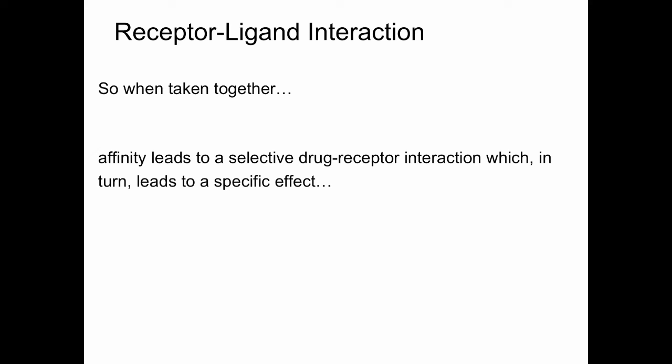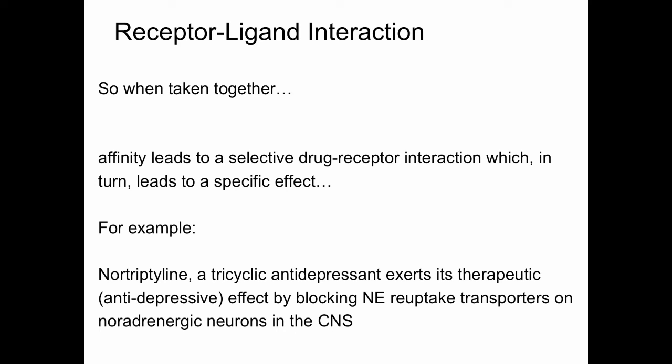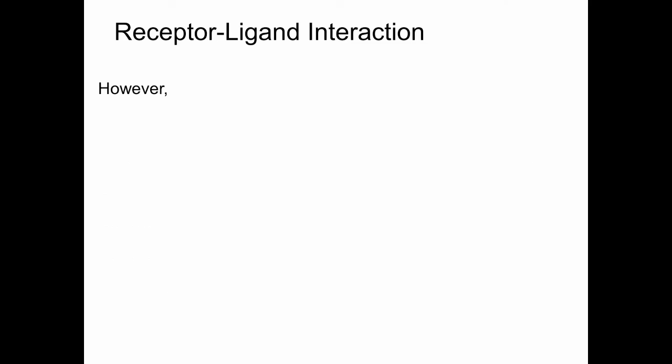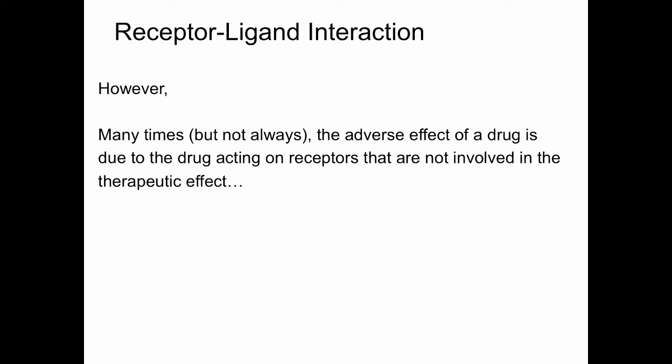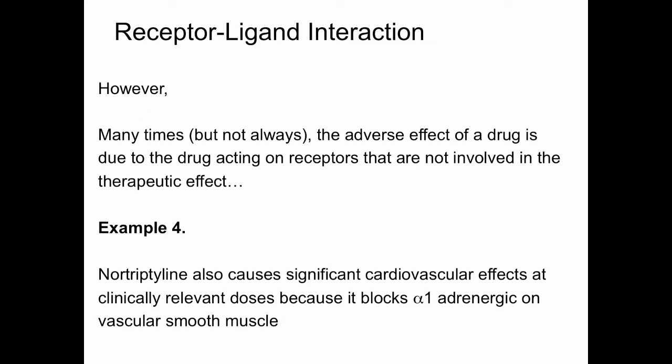Affinity leads to a selective drug-receptor interaction, which in turn leads to a specific effect. For example, nortriptyline, a tricyclic antidepressant, exerts its antidepressive actions by blocking norepinephrine reuptake transporters on noradrenergic neurons in the CNS — a specific, high-affinity interaction leading to a specific effect. However, the adverse effects of a drug are often due to the drug acting on receptors not involved in its therapeutic effect. Nortriptyline also causes significant cardiovascular effects because it binds and blocks alpha-1 adrenergic receptors on vascular smooth muscle — a high-affinity, selective interaction, but an adverse rather than therapeutic effect.